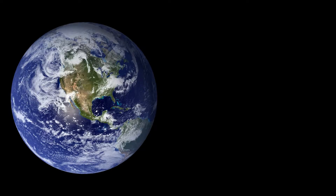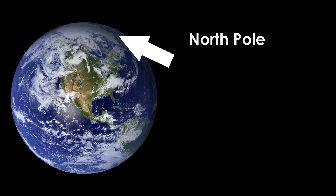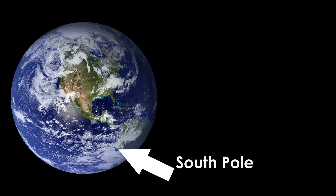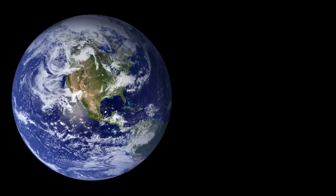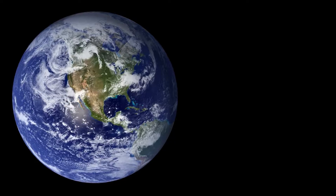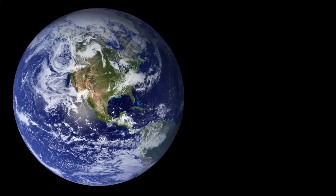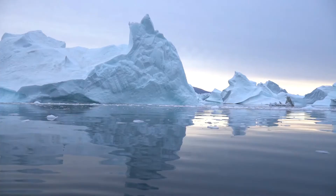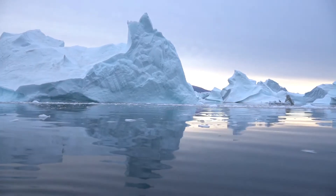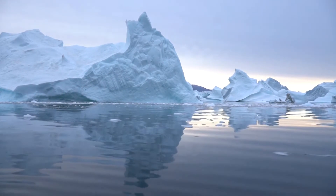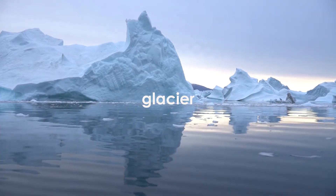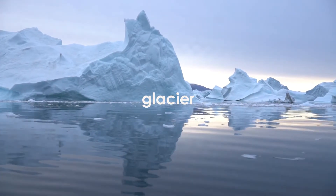At the top and bottom of earth, which we call the north and south poles, quite a lot of the water is in the solid state of matter — ice. The largest pieces of ice are called glaciers.